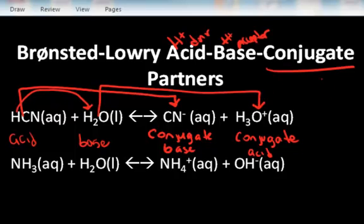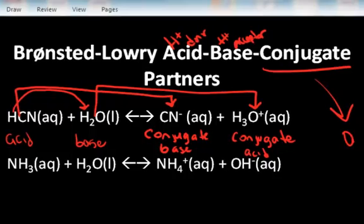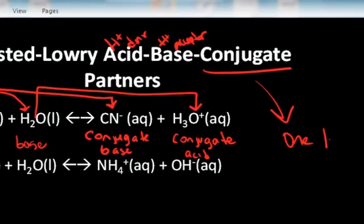They are different. The conjugate acid-base partners differ chemically from each other by one proton. The conjugate base partner of an acid has one less proton. The conjugate acid partner of a base has one more proton.